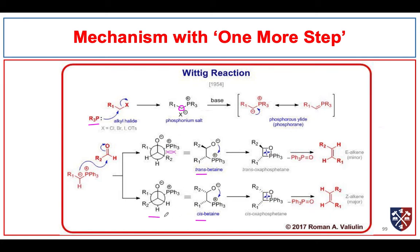This is a more stable conformation, much more likely to occur, and it ring-closes to form the oxaphosphetane. This lower-energy pathway leads to the Z-alkene, and the higher-energy pathway leads to the E-alkene. By invoking this additional intermediate, it helps give an explanation for the fact that these reactions very much favor formation of the Z-alkenes.